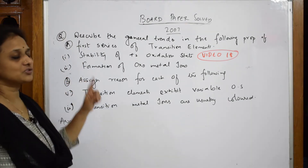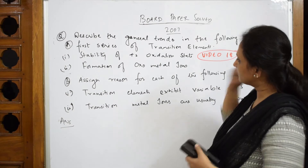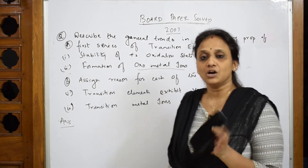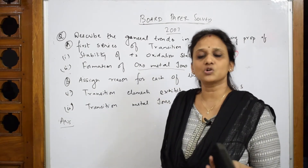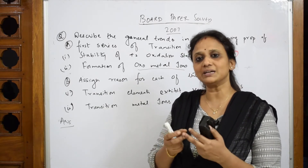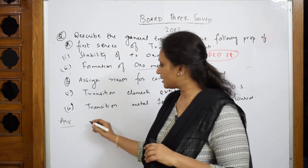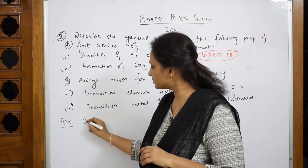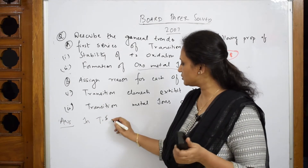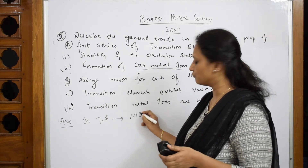Next, formation of oxo-metal ions. Whenever you have to answer this question, basically you have to say that it is your oxygen and your metal atom. The combination of oxygen and the metal atom forms oxo-metal ions. In transition series — I am writing transition metals as TS — you have formation of metal oxides of type MO.